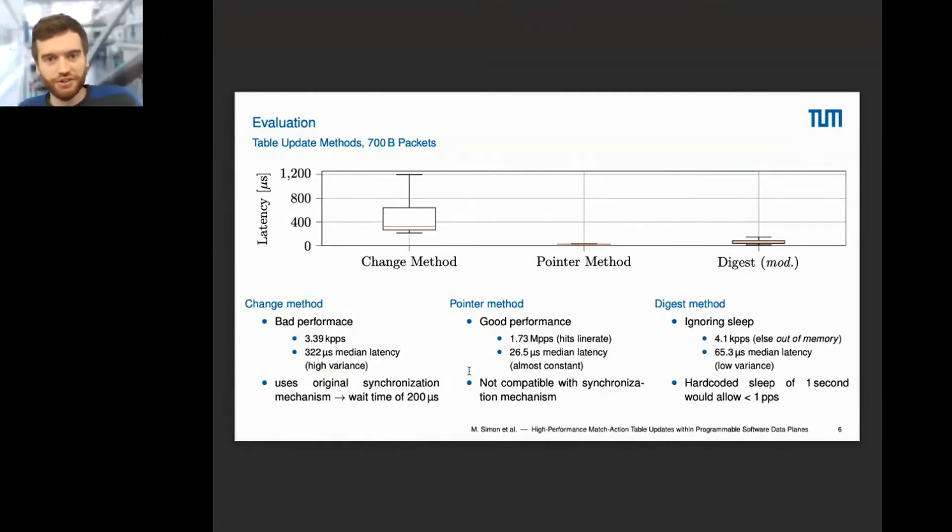However, I said this is not compatible with the synchronization mechanism. But because it performs so well, we decided to go with this method and afterwards change the synchronization method to be compatible. Just for comparison, the digest method would allow less than one packet per second because of the long waiting time. If we ignored the sleep, we'd get around 4,000 packets per second, otherwise we get an out-of-memory error because for every message sent to the digest, memory has to be allocated.